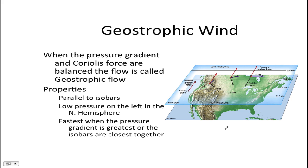Geostrophic winds occur when the pressure gradient force — remember, this is determined by the difference in high and low pressure and how close the isobars are — and the Coriolis force are balanced. Geostrophic winds travel parallel to isobars and are fastest when the pressure gradient is the highest, meaning the isobars are very close together.